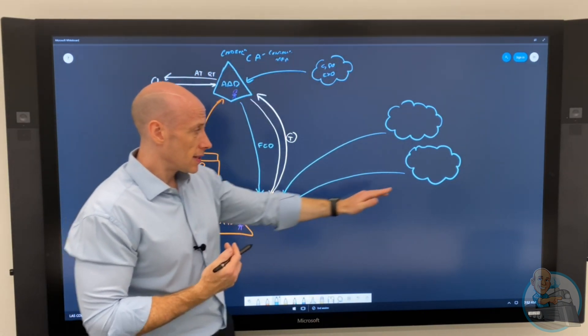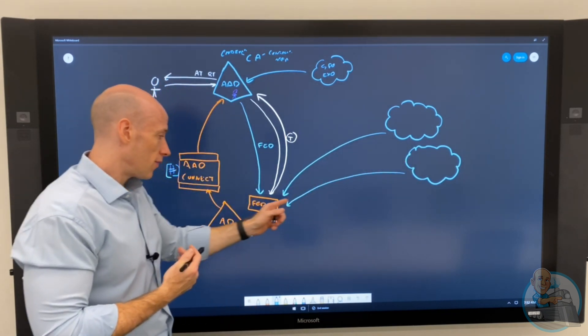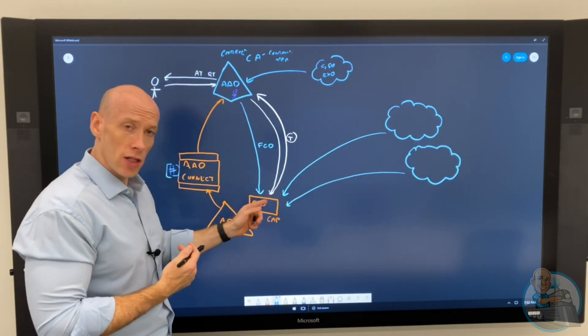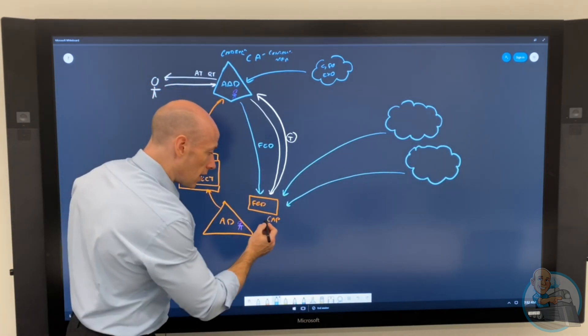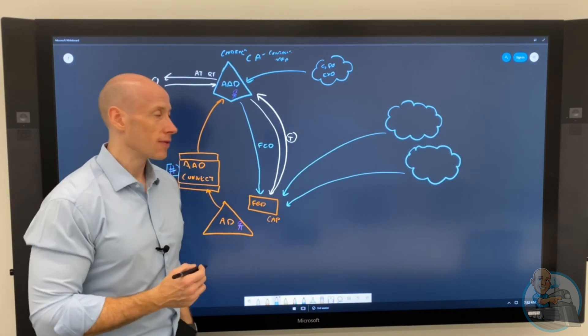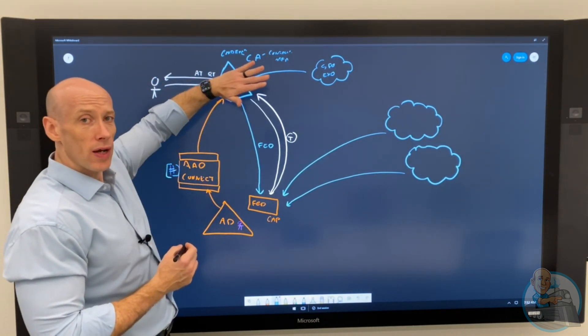If I have applications that are still federated to my federation service on premises, this is not part of the flow. The user is trying to connect to this service, it will redirect to the federation box, it will create the tokens and send me back. So the only policies I'm going to be using are these client access policies. Azure AD is not in the equation.